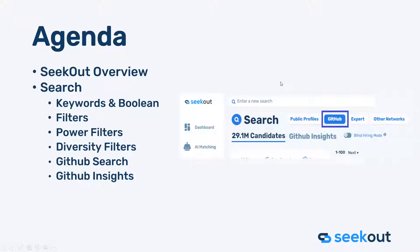The agenda for today is a brief overview of SeekOut and the different licenses available, including which one has GitHub tech sourcing. We'll spend most of our time on search capabilities: keywords, Boolean, filters, power filters, diversity filters, and combining all of those to find the right candidate. We'll be mostly inside the GitHub search, covering both GitHub search and GitHub insights.